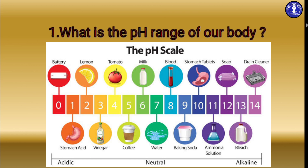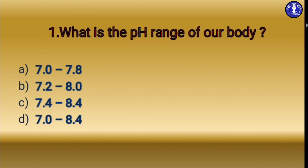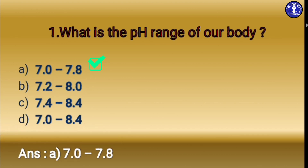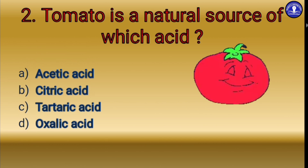Similarly, if we go from 7 to 14, it is alkaline. 7 is called neutral because it is neither acidic nor basic — distilled water is the best example. The options are: option A 7.0 to 7.8, option B 7.2 to 8.0, option C 7.4 to 8.4, and option D 7.0 to 8.4. The correct option is option A: 7.0 to 7.8.